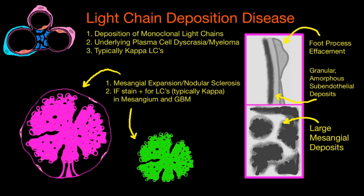The difference between whether a light chain forms an amyloid fibril or these large deposits really comes down to the chemical nature and structure of each light chain and how it tends to stick together. That's what separates the two, but they do produce different patterns on biopsy.